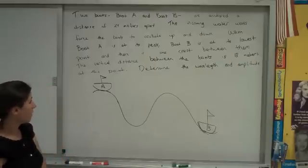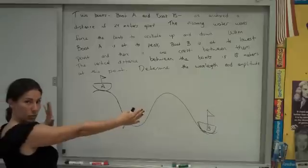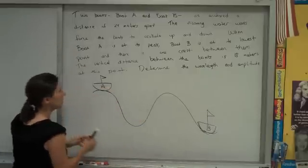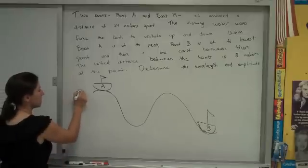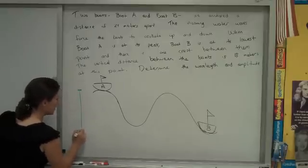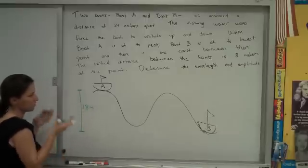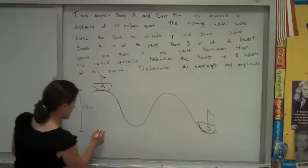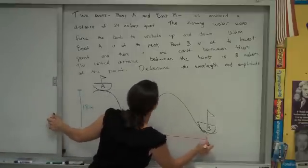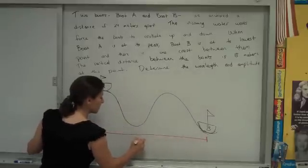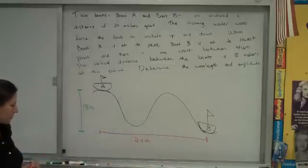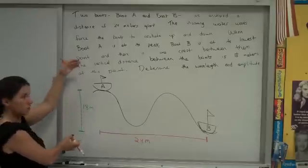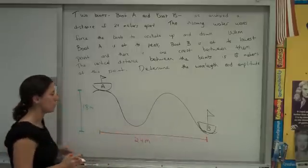And also a couple numbers we're given. We know the horizontal distance between the boats. We know the vertical distance between the boats. So let's label both of those. That vertical distance, that's 18 meters. And that horizontal distance is 24 meters. And so we're looking for wavelength. We're looking for amplitude. Obviously this vertical information is going to help us with amplitude. This horizontal information is going to help us with wavelength.